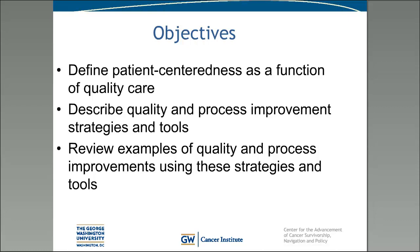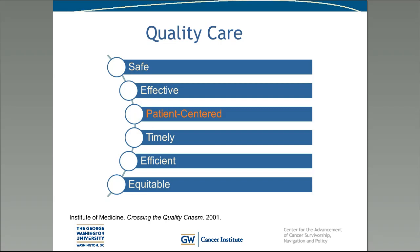Before we get started, I want to define patient-centeredness as a function of quality care, describe quality and process improvement strategies and tools, and review examples of quality and process improvements using these tools. The Institute of Medicine defines quality care as being comprised of six components: safety — avoiding injuries to patients from care intended to help them; effectiveness — providing services based on scientific knowledge to all who could benefit while refraining from providing services to those not likely to benefit; patient-centeredness; timeliness — reducing waits and harmful delays; efficiency — avoiding waste of equipment, supplies, ideas, and energy; and equity — providing care that does not vary in quality based on personal characteristics such as gender, ethnicity, geographic location, or socioeconomic status.